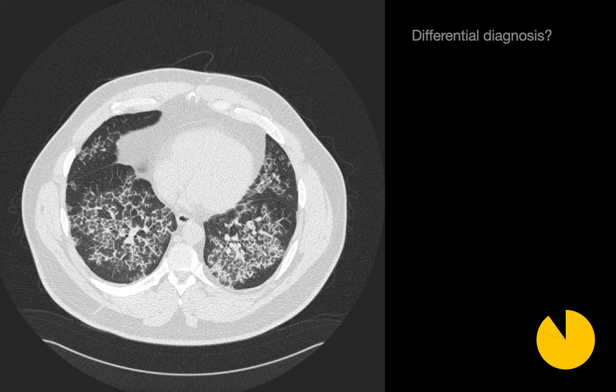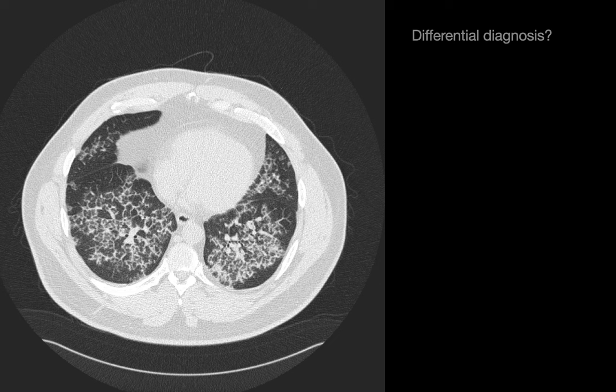What's your differential diagnosis? There are heterogeneous opacities in this patient's lungs in a multifocal bilateral distribution. Two imaging patterns are present: an interlobular septal pattern that predominates, and also some ground glass opacities. Since the interlobular septal pattern is the more dominant of the two, it's a good place to start from for constructing our differential diagnosis.